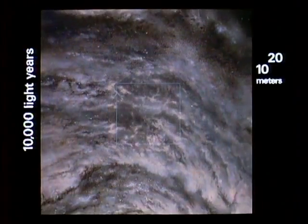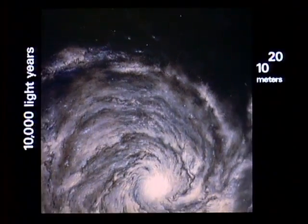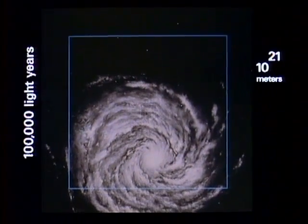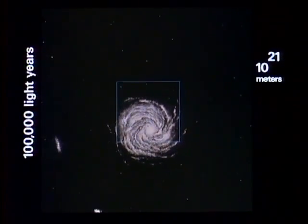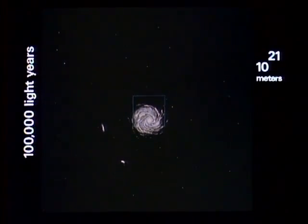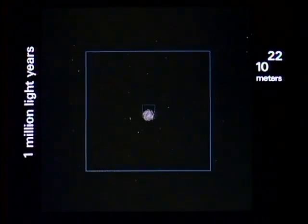The time and path we chose to leave Chicago has brought us out of the galaxy along a course nearly perpendicular to its disk. The two little satellite galaxies of our own are the clouds of Magellan. 10 to the 22nd power, a million light years.